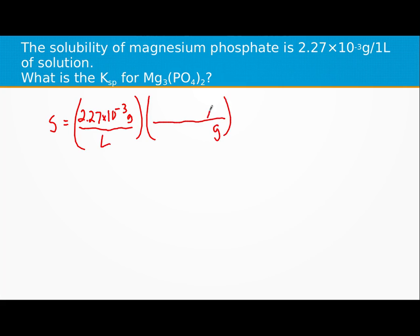We'll need to turn our grams into moles by getting the molecular weight of magnesium phosphate. So I have three magnesiums which each have a mass of 24.31.